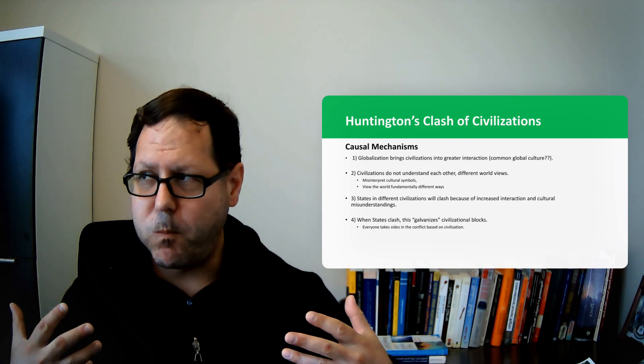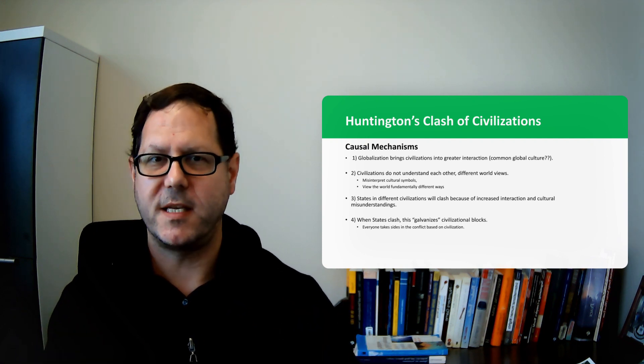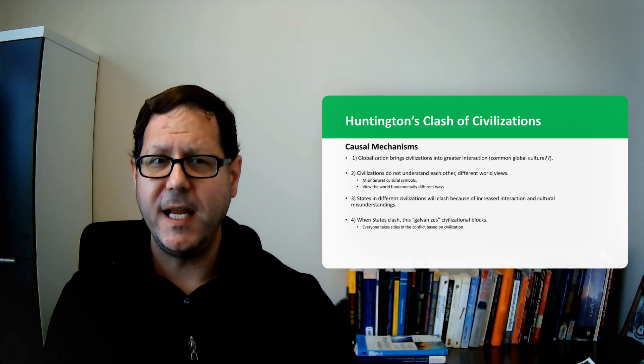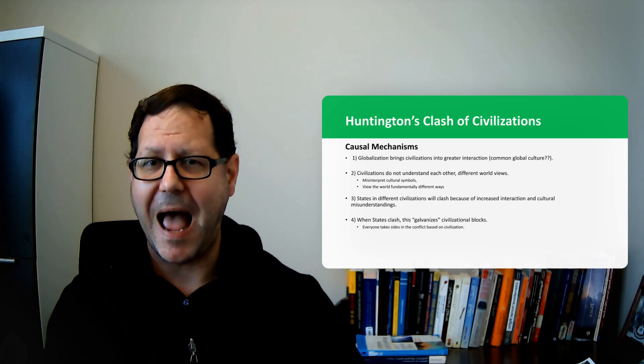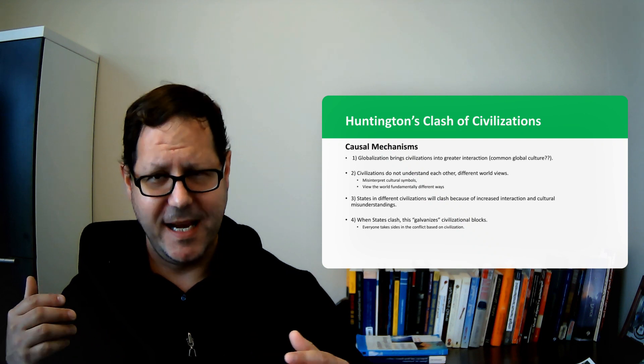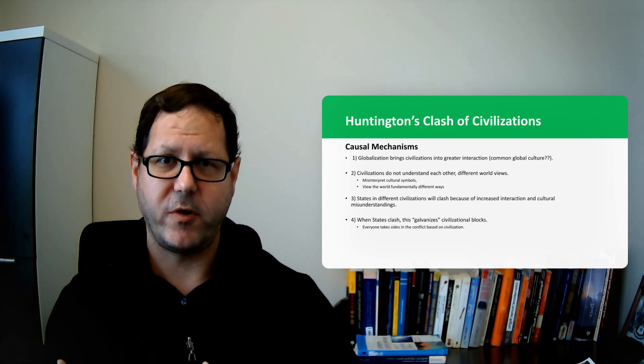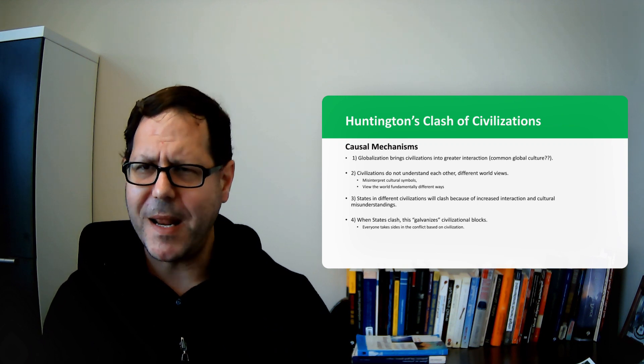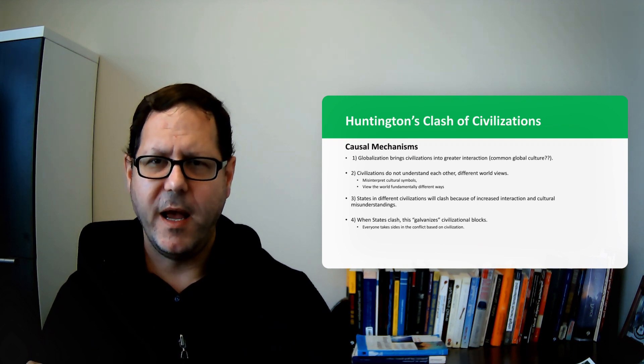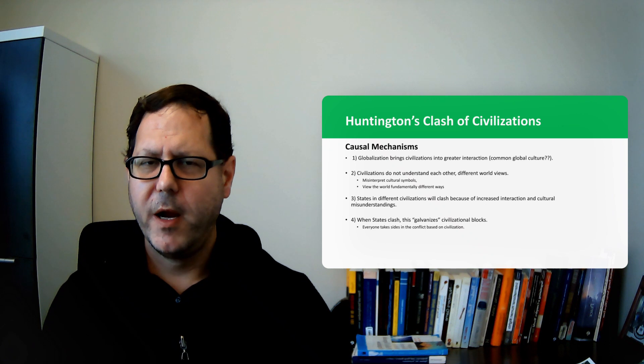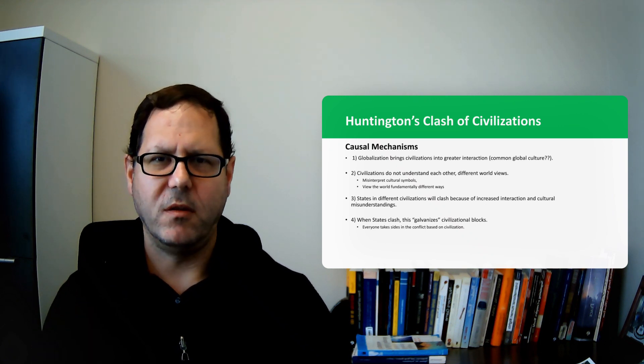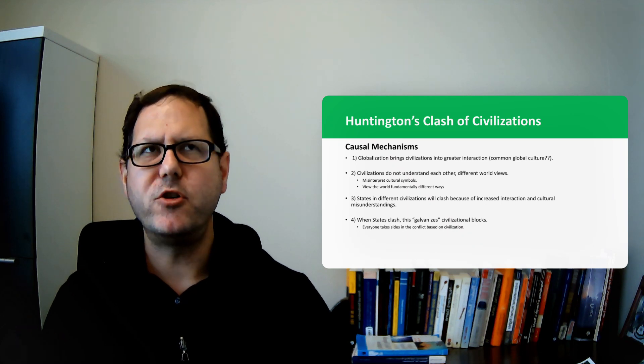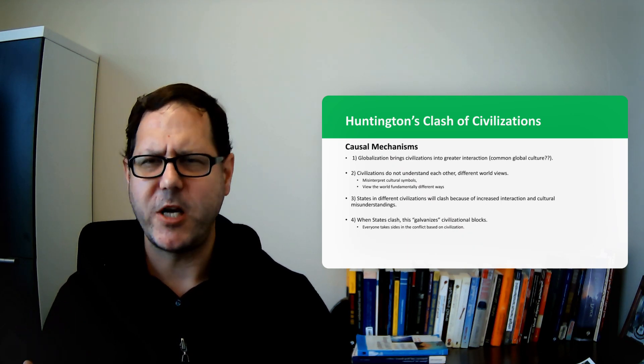And now they were suddenly being pushed into this global system in which maybe even there is a common global culture emerging with Western Christendom kind of at the center of that. And so a lot of what he talks about is this conflict, this tension between Western Christendom and other civilizations. And he notes that civilizations do not understand each other at just a really fundamental level, that there's just different worldviews, different foundational assumptions about pretty much everything.